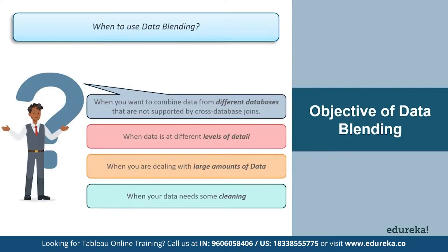The next case is when you have data at different levels of detail. Sometimes one data set captures data using greater or lesser granularity than the other. For example, transactional data might capture all transactions, while quota data might aggregate transactions at a quota level. Because the transactional values are captured at a different level of detail in each data set, you should use data blending.